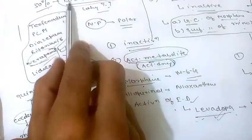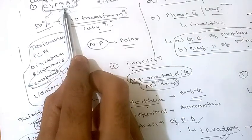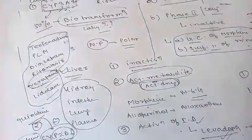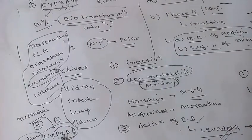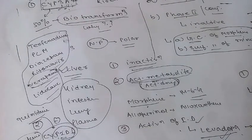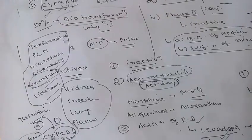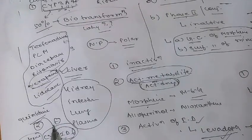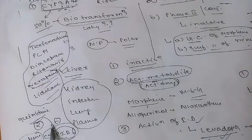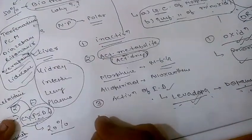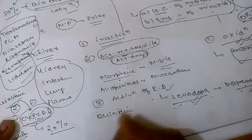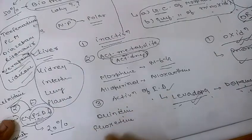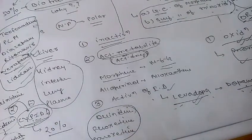Inducers of CYP2D6 are the same as CYP3A4 — phenobarbital and rifampicin. Drugs metabolized by CYP2D6 include nebivolol, clozapine, and codeine. Inhibitors of CYP2D6 include quinidine, fluoxetine, and paroxetine.